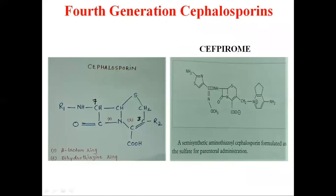Looking at the chemical structure of cephalosporins, the nucleus is the cephalosporin nucleus, which is modified to gain different properties. This is the 7-aminocephalosporanic acid, and you can see the beta-lactam ring fused with the dihydrothiazine ring. The 4th generation cephalosporins are structurally related to the 3rd generation cephalosporins.